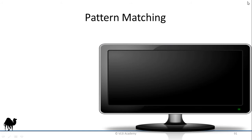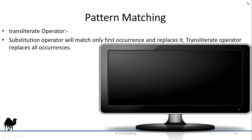Let us see one small example of the transliteration operator in Perl before we finish this tutorial. The transliterate operator is an extension of the substitution operator. The limitation of the substitution operator is that you can only substitute the first occurrence of a match and not the others. The beauty of the transliterate operator is that it can replace all occurrences of the match found, and the syntax of the substitution and transliterate operators are very similar — you just replace S with TR.